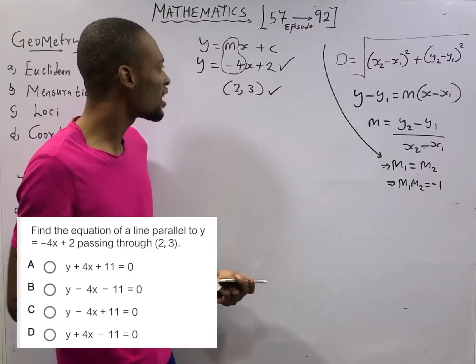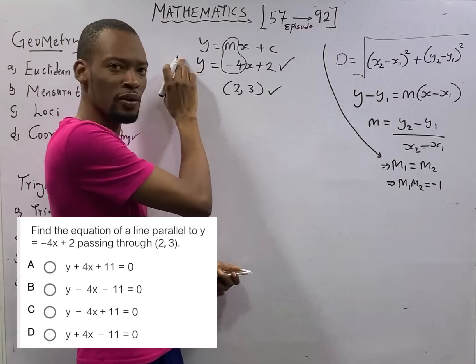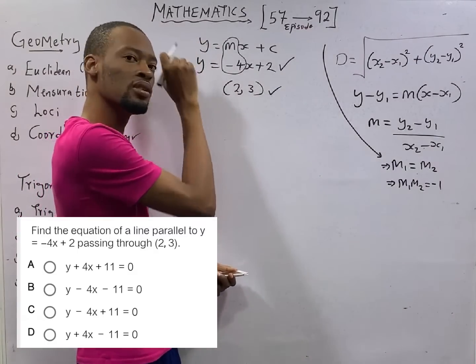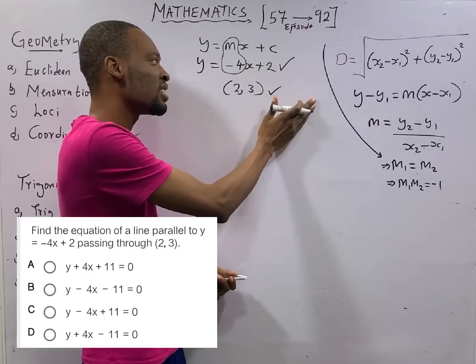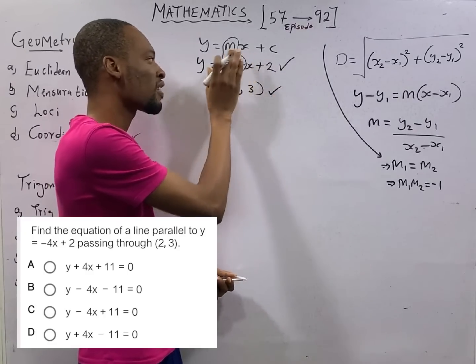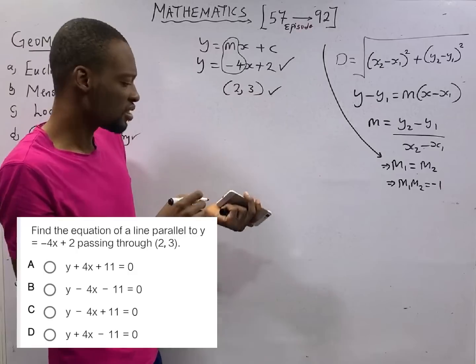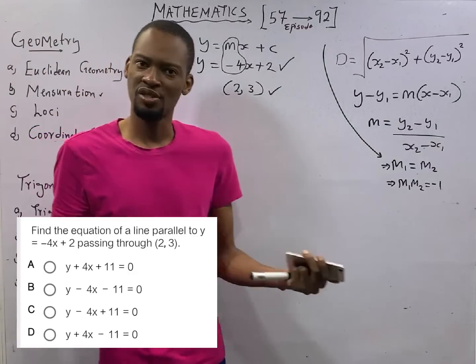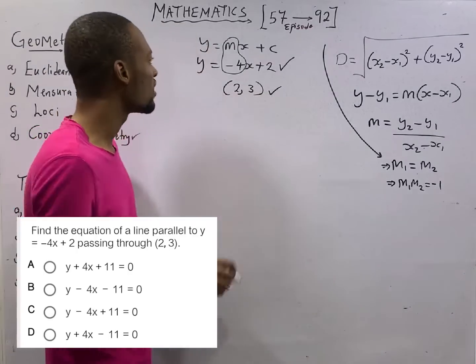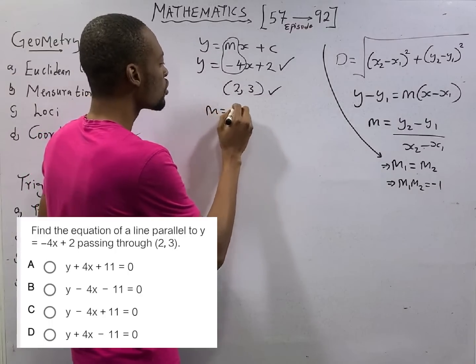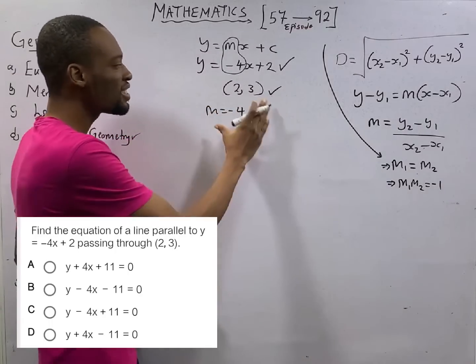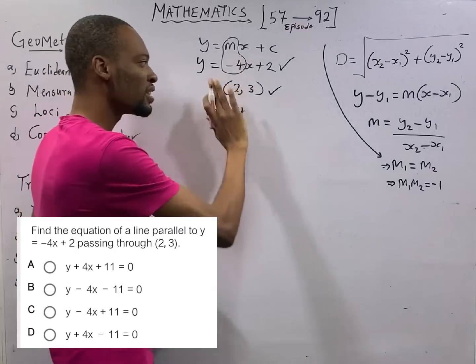Making y subject of formula does not mean 2y or any value in front of y. Y must stand alone. From here, m equals minus 4, and it is this gradient we are going to use for the second line because when lines are parallel, gradients don't change.